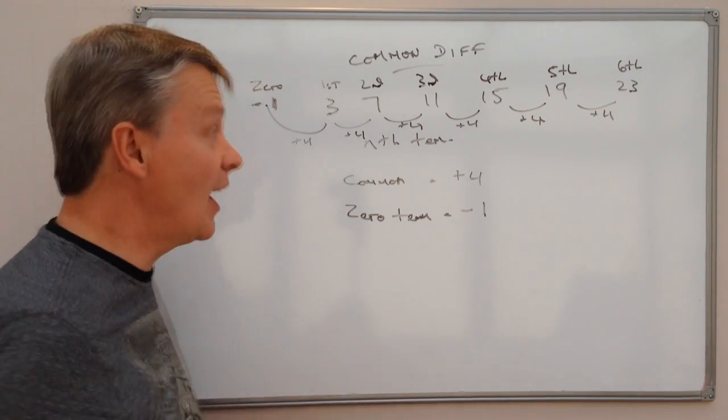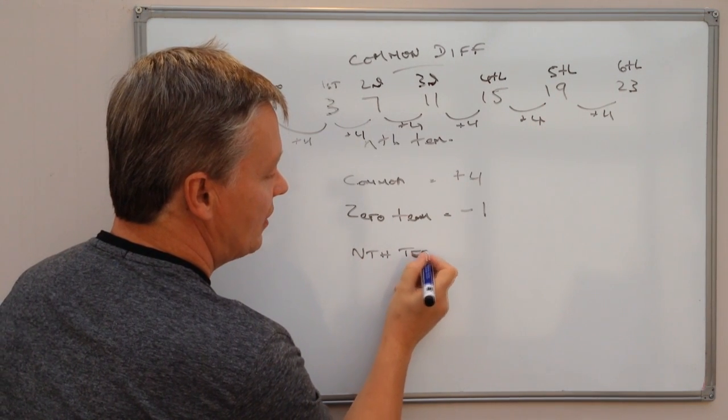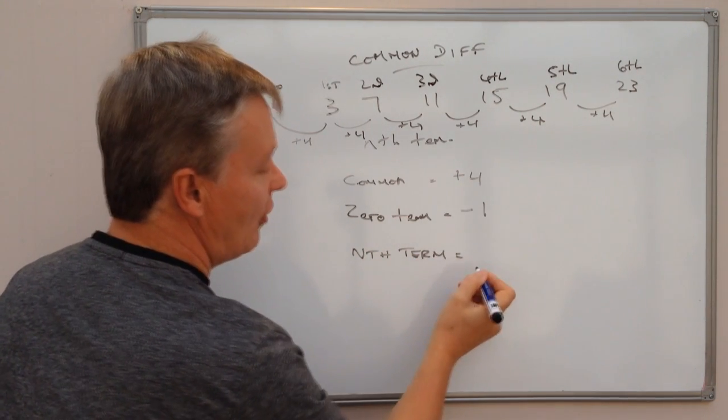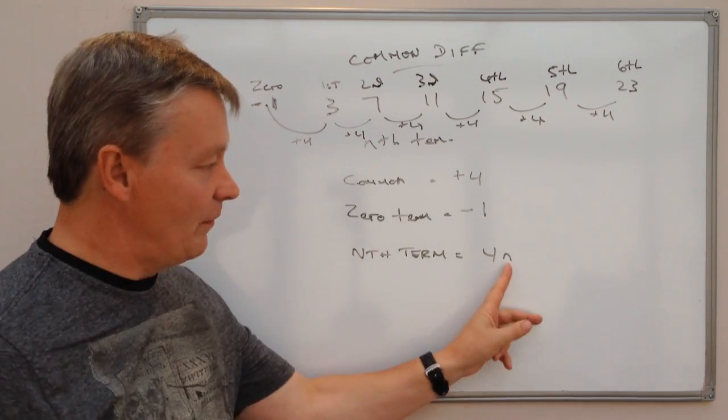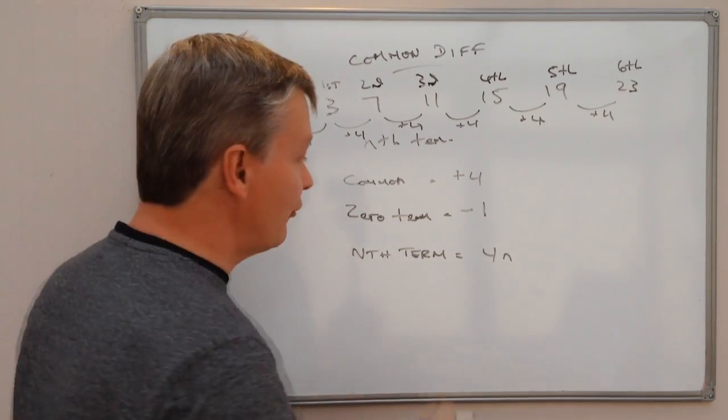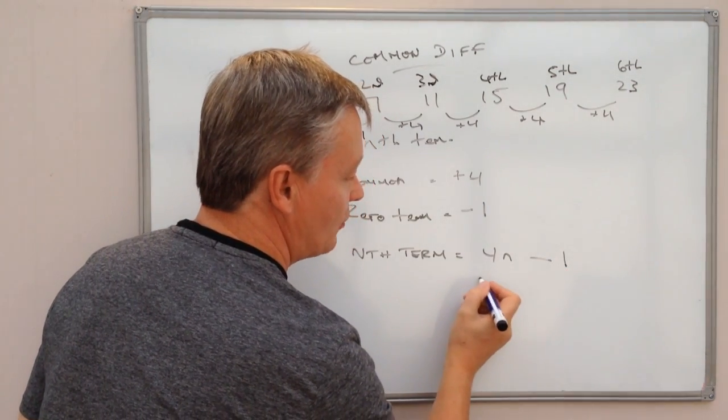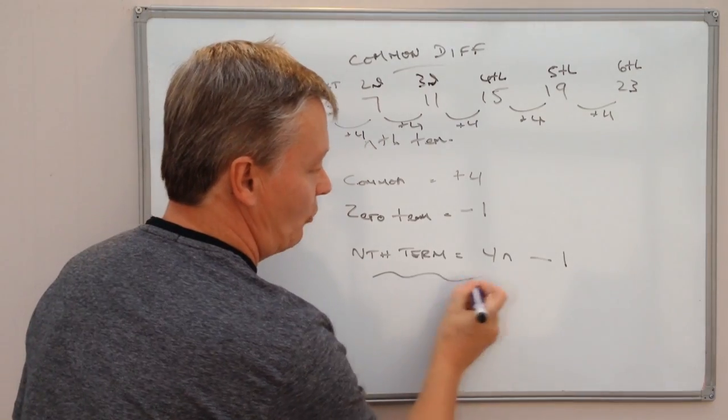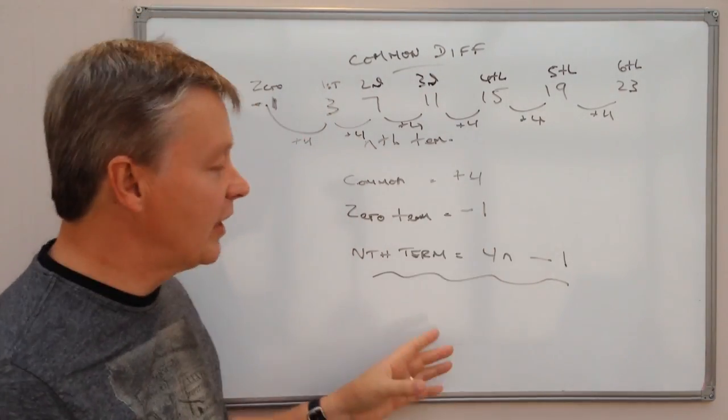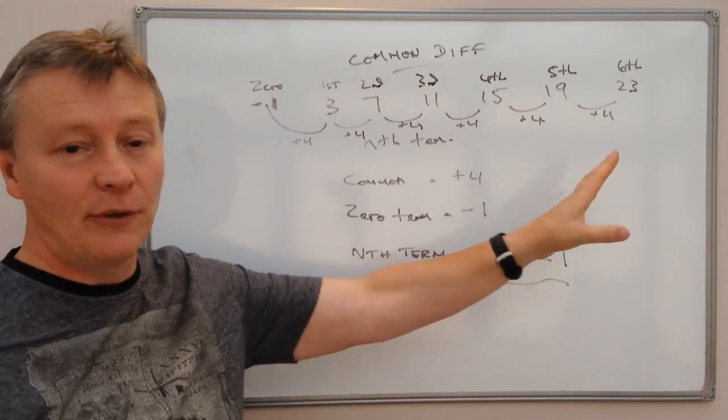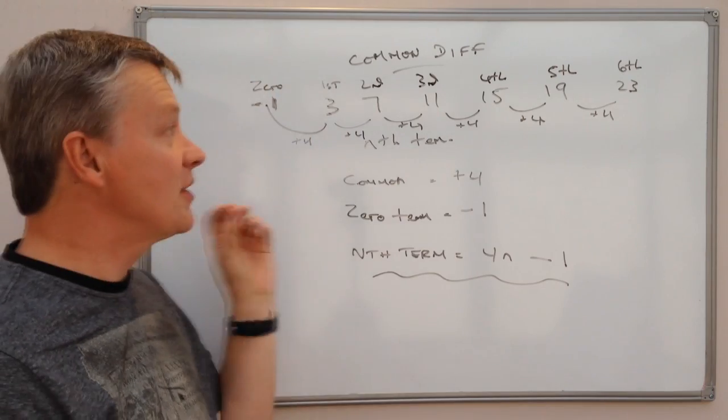And then we put that together and we put it into a formula that says the nth term is going to be 4, which is the common difference, multiplied by the number, the term that you're looking for, minus the zero term. And that would be the formula that you'd want to know. So I can work out using that formula any one of the terms of this particular common difference sequence.